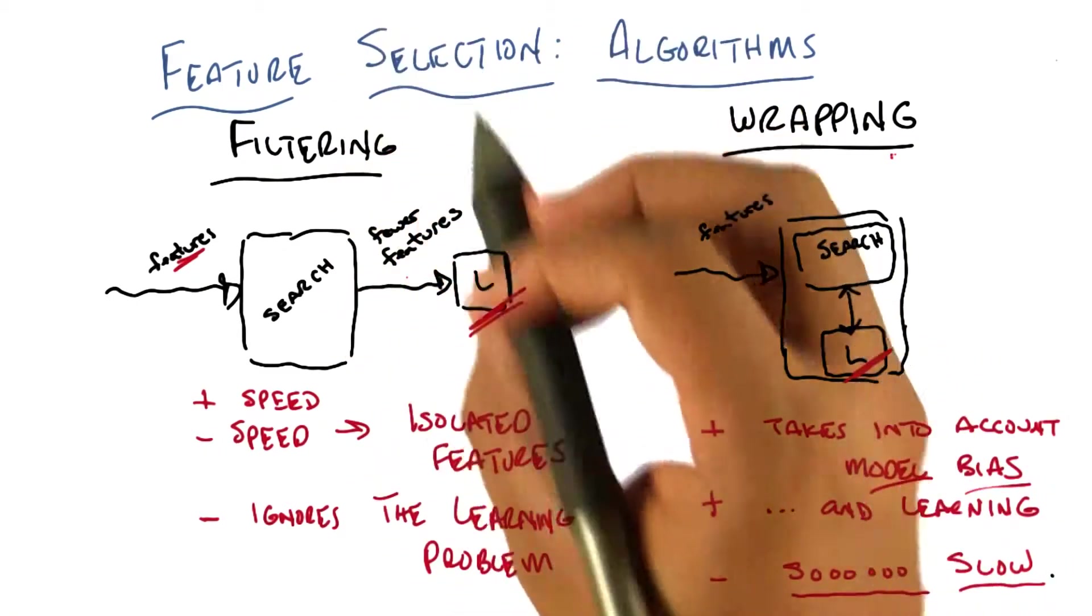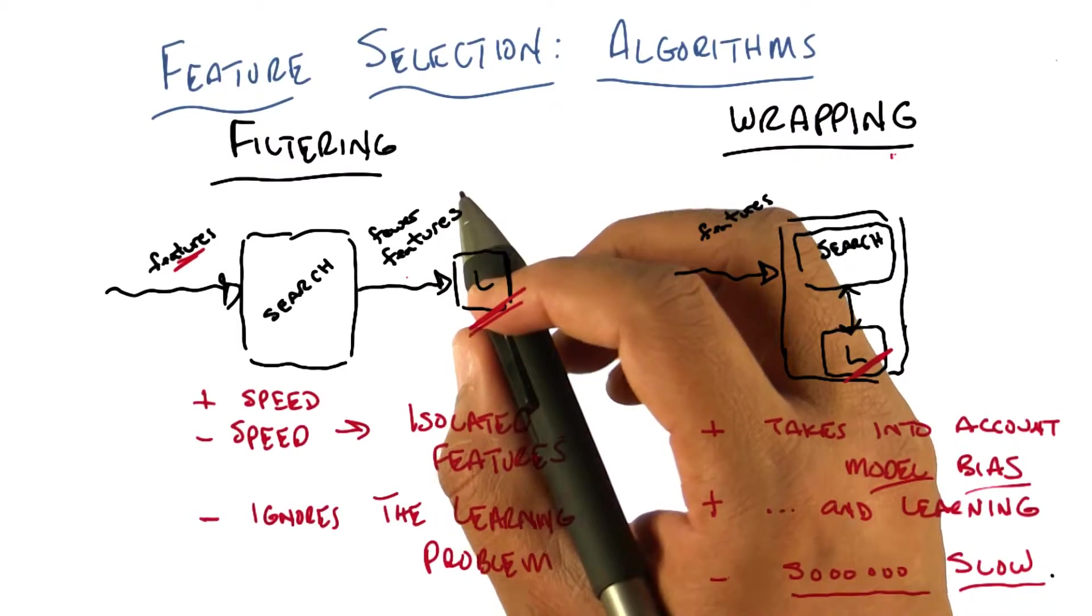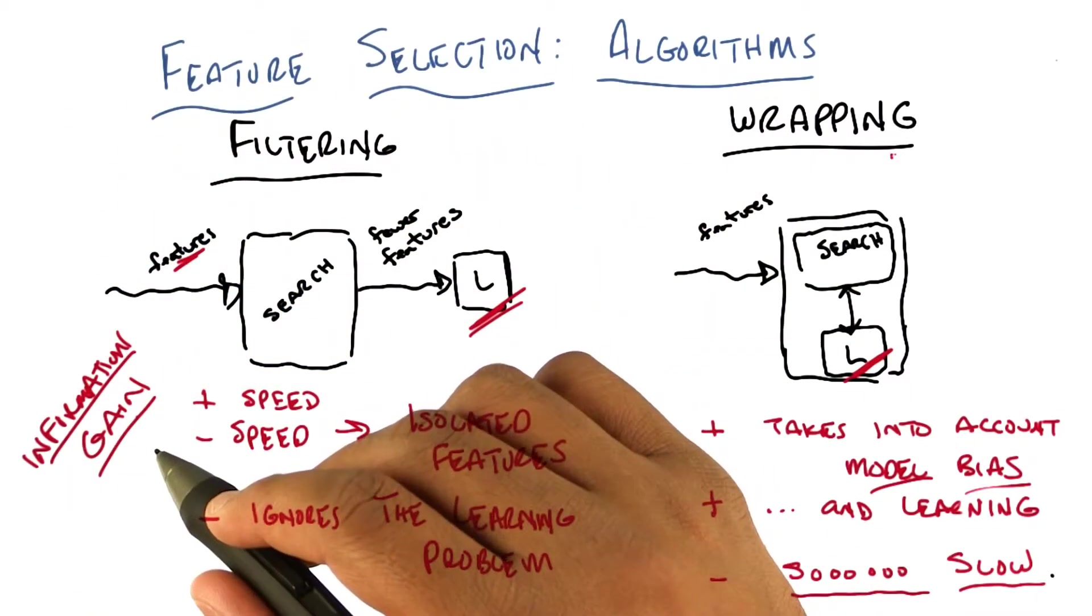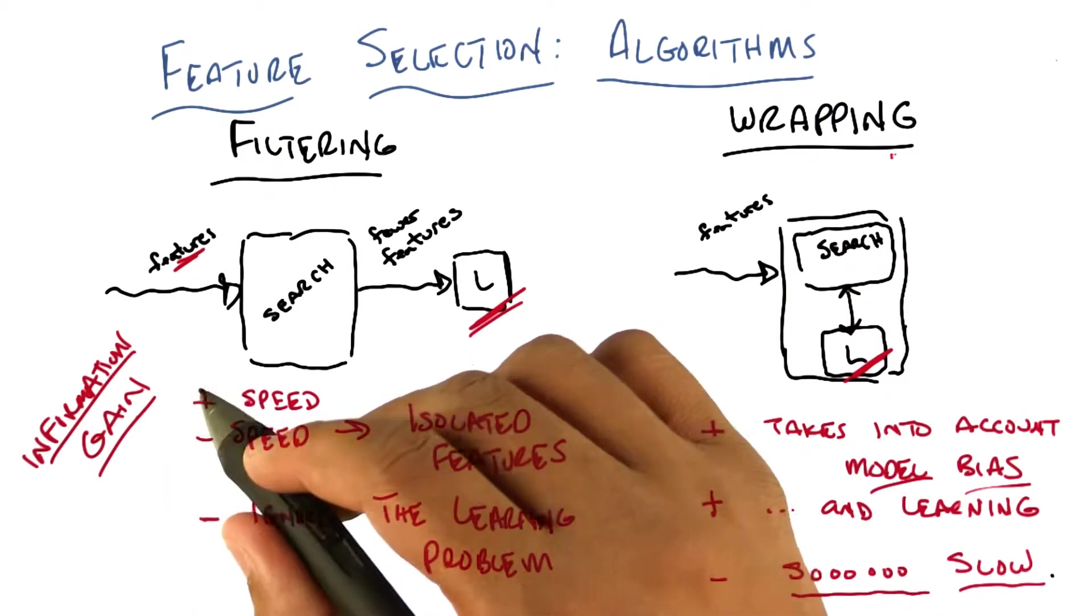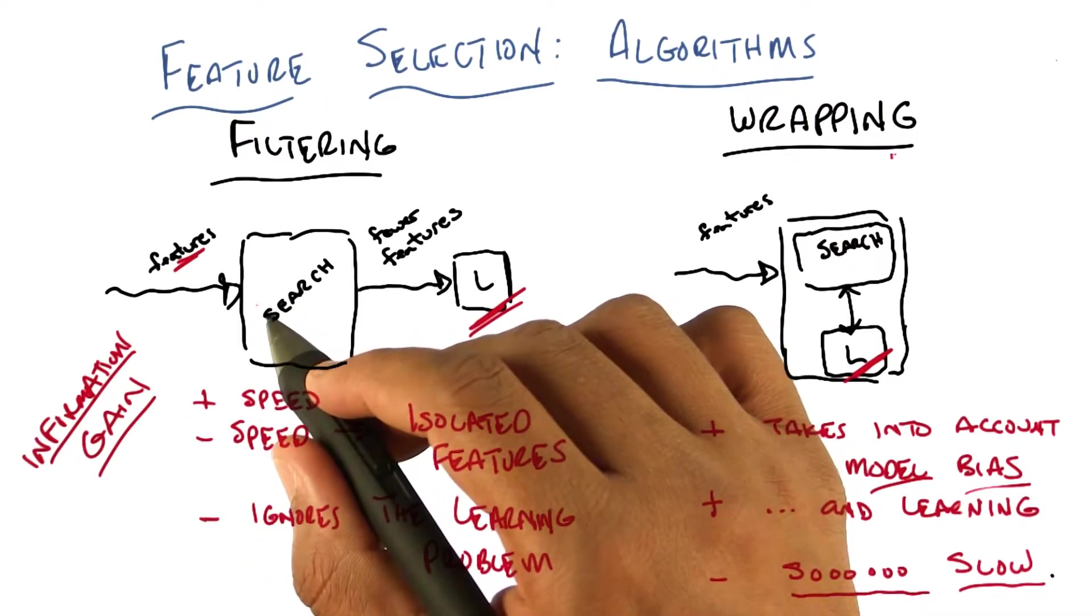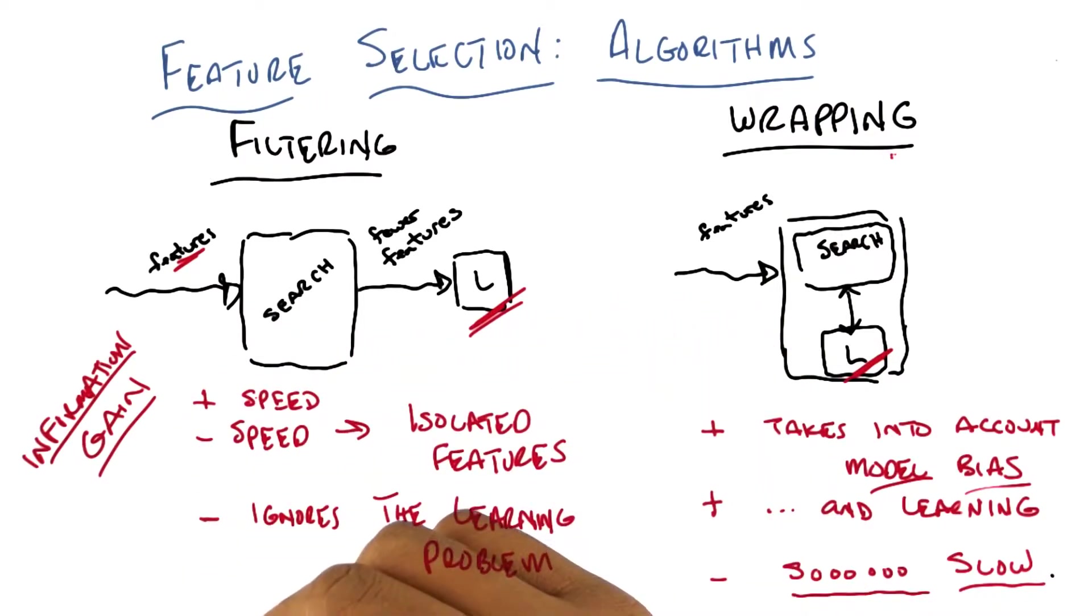So in fact, if you take the main part of decision trees, which is information gain, that's actually a way of doing filtering on the features. So the criterion is information gain. Find me the features that provide you with the most information given the class label, and that gets exactly the subset. Cool.